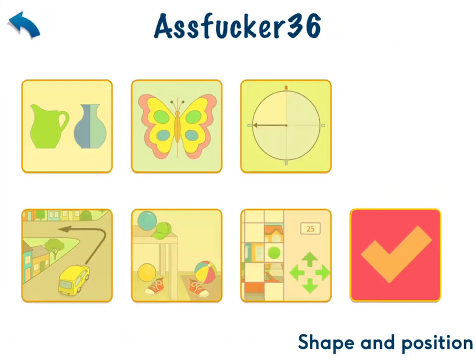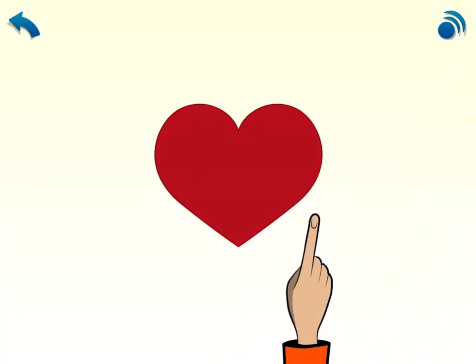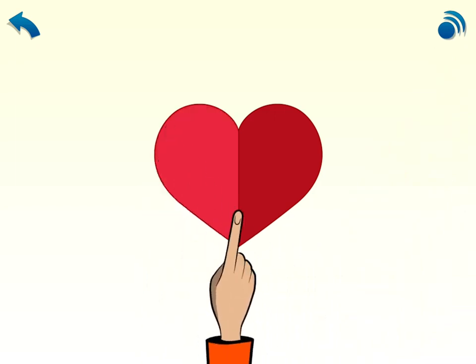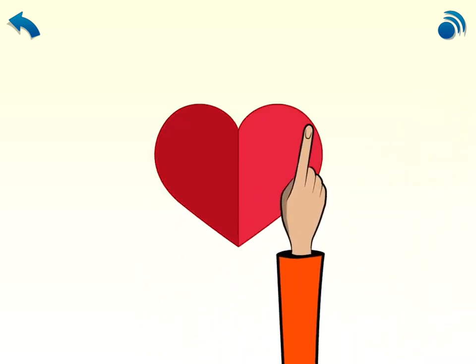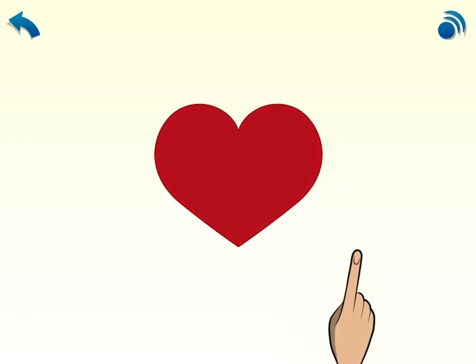Choose the flashing button. Remember, you can touch this to hear me again. Now look. It's a heart. Look at this half. This half is the same, but the other way round. One half is a reflection of the other, like in a mirror. We say this shape is symmetrical.